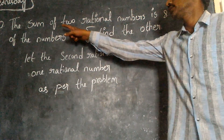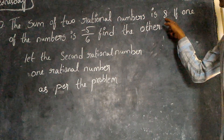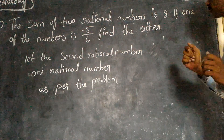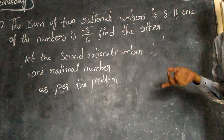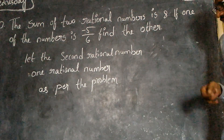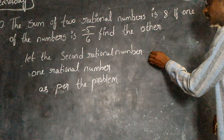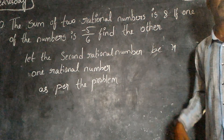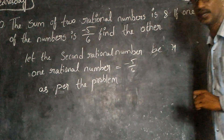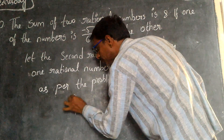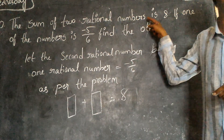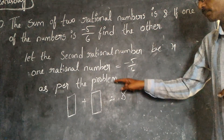Sum of two rational numbers is eight. If one of the rational numbers is minus five by six, what is the other? The second rational number is X. One rational number that is given is minus five by six. As per the problem, the first rational number plus the second rational number equals eight.